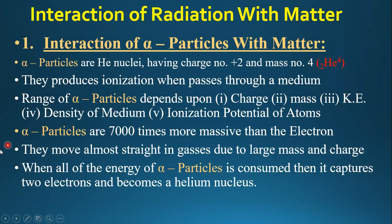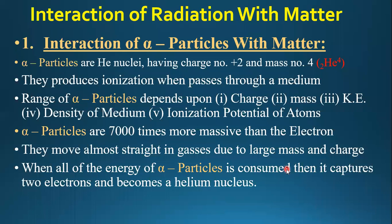When all of the energy of an alpha particle is consumed, it captures two electrons and becomes a helium nucleus. This is the ultimate destiny of the alpha particle — it becomes a neutral helium atom.